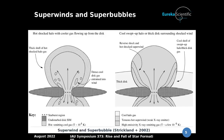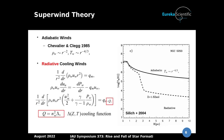Here you see the schematic view of superwinds. On the left you see a region with the formation of a super bubble, and on the right we see that because of cooling the bubble is broken. There is some theoretical work by Chevalier and Clegg in which they assume a radiative fluid model.